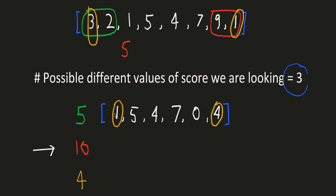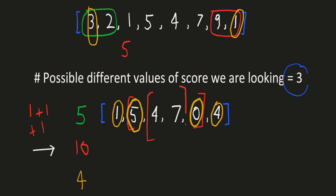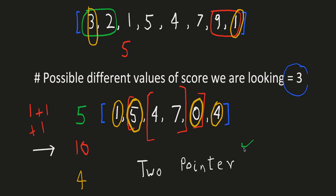Now let's change the example so we have more pairs summing to 5. When we choose the first and the last element we get a sum of 5, so we have at least two pairs. We then look for the same subproblem in the remaining part of the array. The first and last element of that sub-array also sum to 5, giving us at least three pairs. You can notice that depending on the pairs chosen, we divide this into subproblems using a two-pointer approach to define the sub-array we are working on.